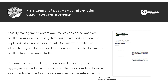Quality management system documents considered obsolete shall be removed from the system and maintained as record or replaced with a revised document. Documents identified as obsolete may still be accessed for reference. Obsolete documents shall be treated as uncontrolled. Documents of external origin considered obsolete must be appropriately marked and readily identifiable as obsolete; external documents identified as obsolete may be used as reference only.